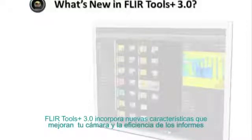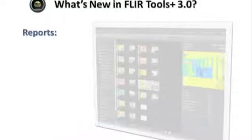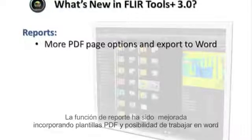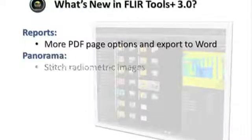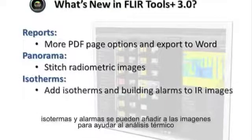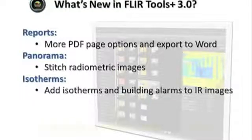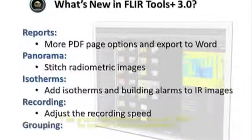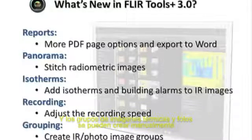FLIR Tools Plus Version 3 has some important improvements that can both enhance your FLIR camera and improve report writing efficiency. The reporting component has been improved, providing several PDF templates as well as the ability to create a Microsoft Word report. The Panorama tool allows you to stitch several thermal images into a high-resolution radiometric image. Isotherms and building alarms can be added to images to aid in thermal analysis. The speed for sequence recordings can be adjusted, and IR and photo image groups can be created manually.